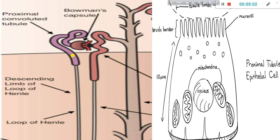When we look at the proximal tubule epithelial cell, it has microvilli — it is a brush-bordered cell.